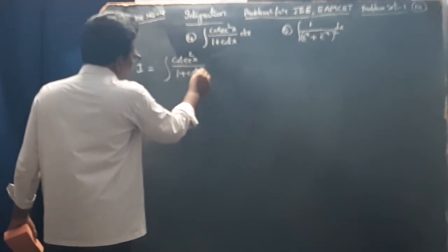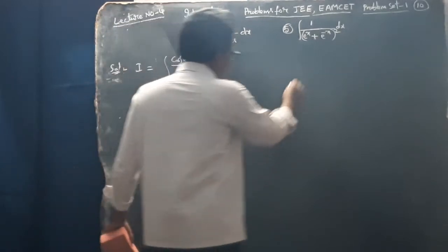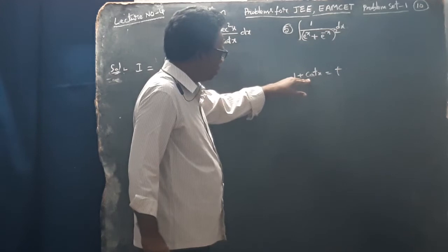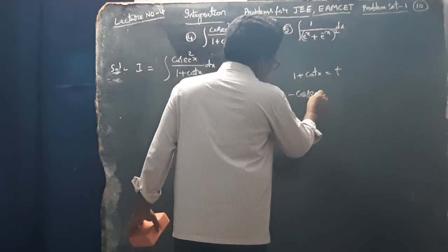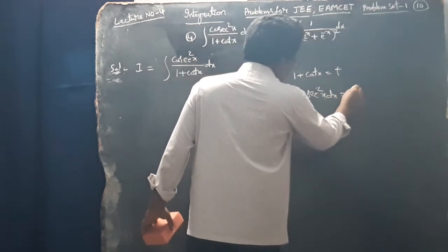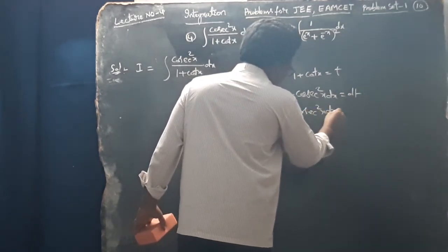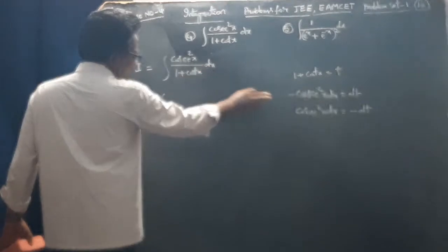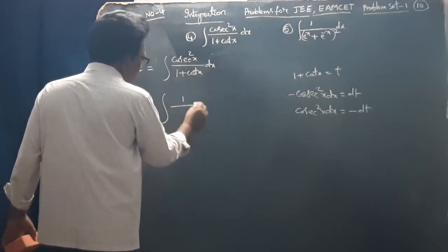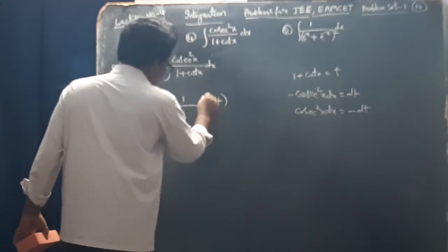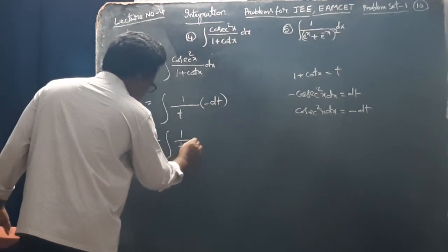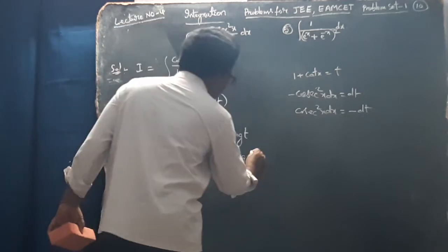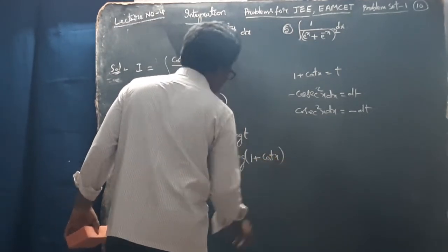Next, integral of cos x by 1 plus cot x dx. Let 1 plus cot x equal to t. Differentiating, the derivative gives us dx equal to minus dt. So this is equal to integral of 1 by t into minus dt, which equals minus integral of 1 by t dt, equals minus log t.